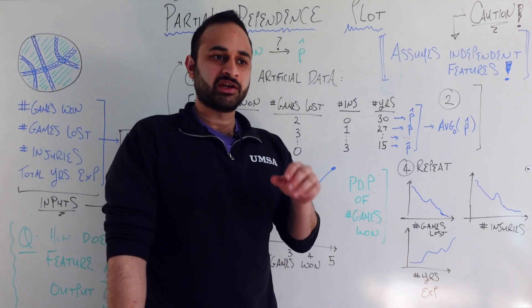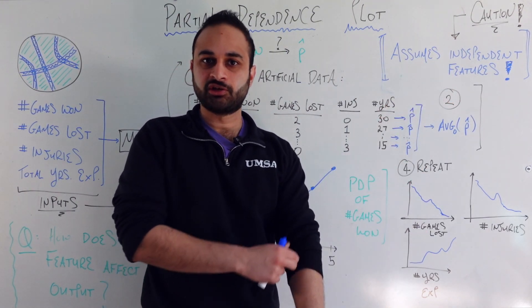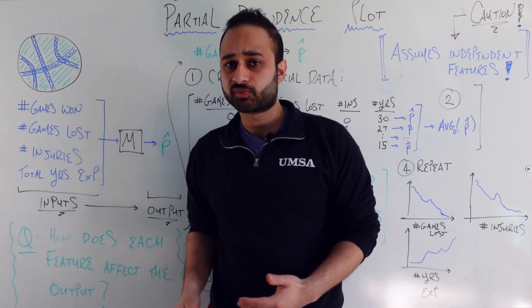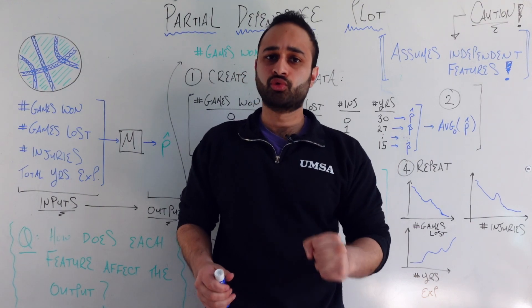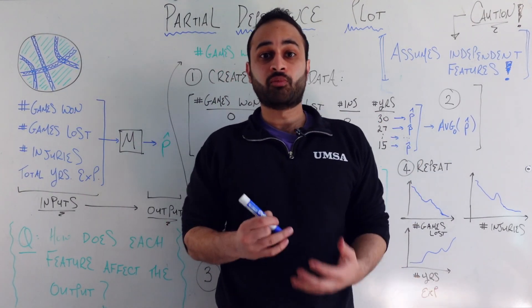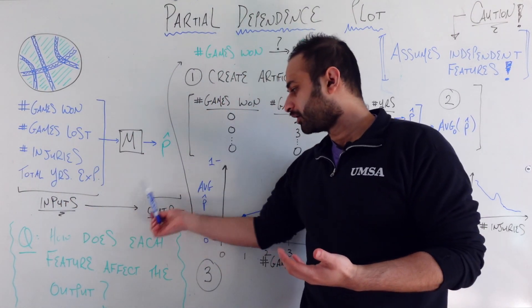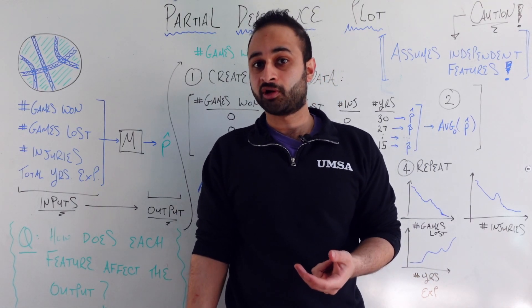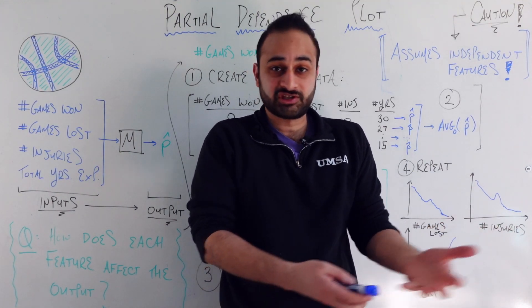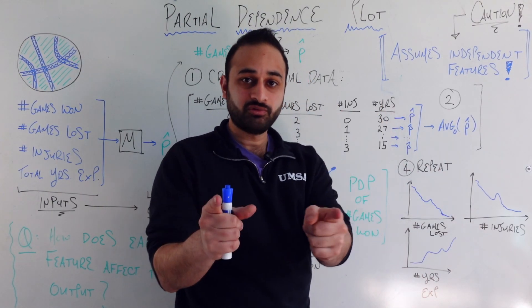I wanted to get those cautions out there because I don't want this to seem like a silver bullet for interpreting models. There are real disadvantages to be aware of, though there are ways to address them. But the main point is that the partial dependence plot is a crucial tool in the data scientist's tool belt — it helps both yourself and others in the organization feel more comfortable about how the model actually works and how each input affects the final output. That can be the make-or-break for whether your model gets adopted in the real world.